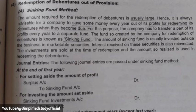The journal entries for the sinking fund method are most important. If the question is for 15 marks, write these journal entries exactly as given. The first entry is: Surplus Account debit to Sinking Fund Account. The second entry for investing the amount is: Sinking Fund Investment Account debit to Bank Account.